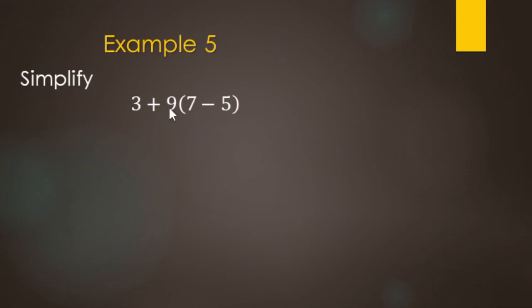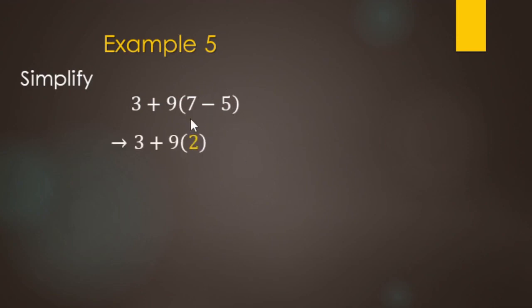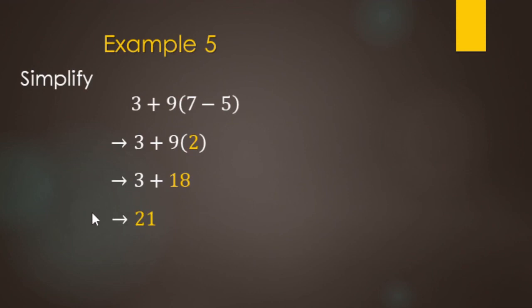Let's simplify 3 plus 9 times the quantity 7 minus 5. This one is tricky, and a lot of students — middle school, high school, even college — mess up on it. Remember: parentheses first, so 7 minus 5 makes 2. A lot of people want to do 3 plus 9 next — do not do that. Multiplication is next: 9 times 2 makes 18. Last, addition: 3 plus 18 makes 21. Again, many students see the 3 plus 9 out front and want to add first — don't do that.